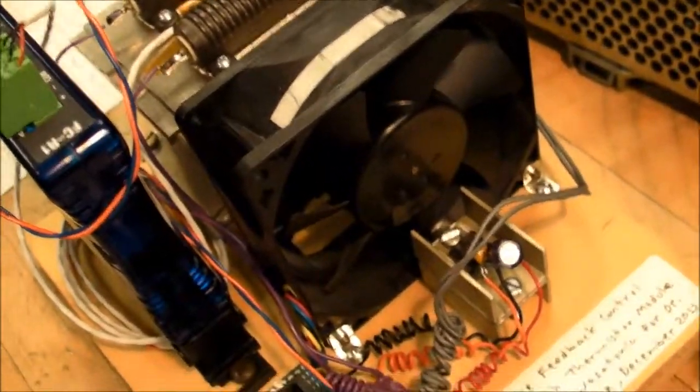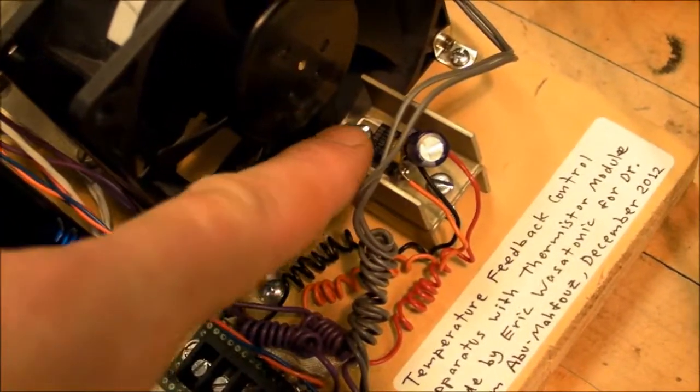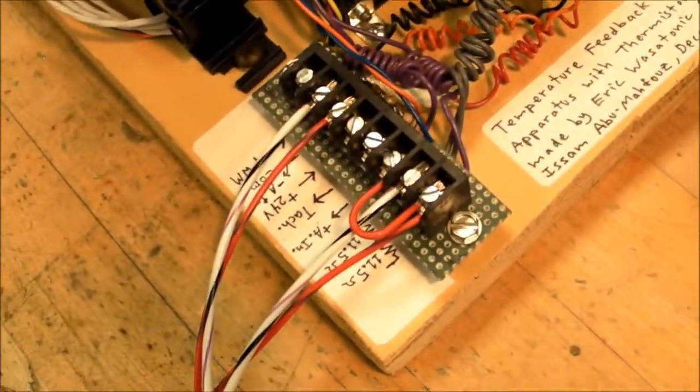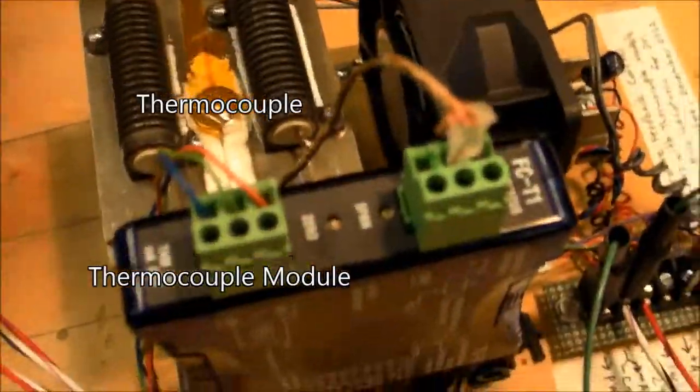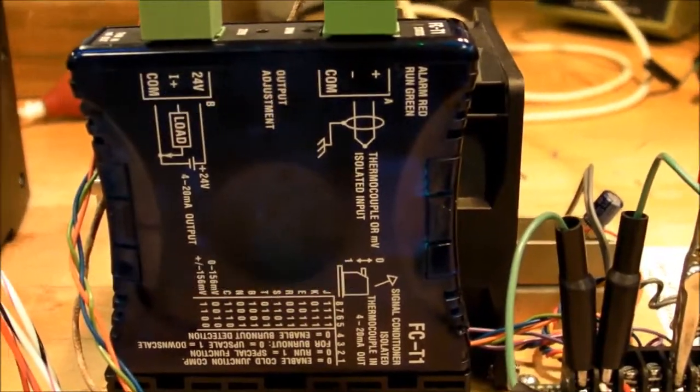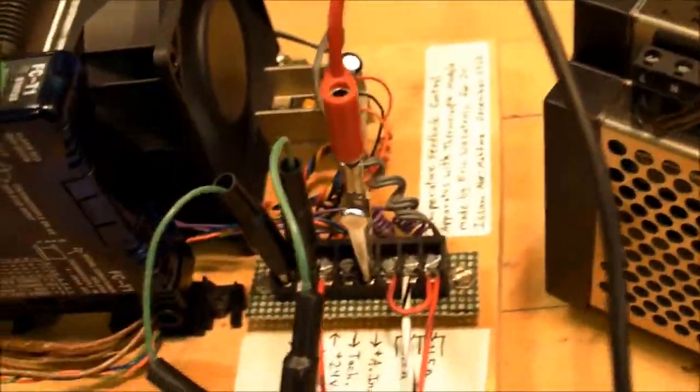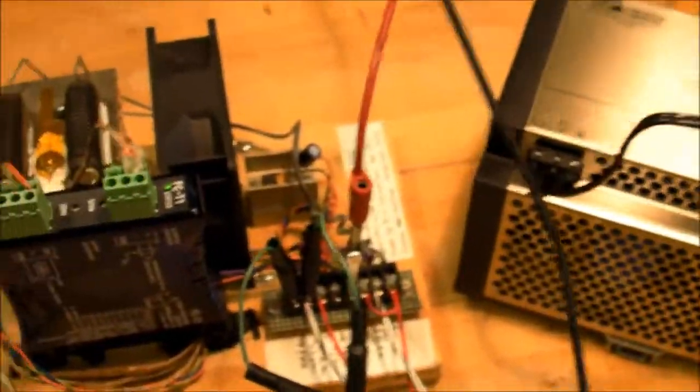There's just a little 12 volt regulator there because I'm inputting 24 volts and the fan needs 12 volts to operate. This one over here is everything's exactly the same except for the thermistor and the accompanying thermistor module. That's the only difference.